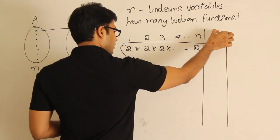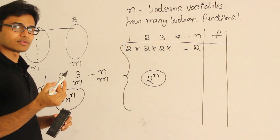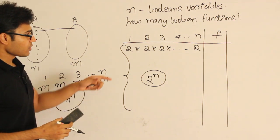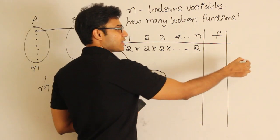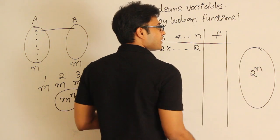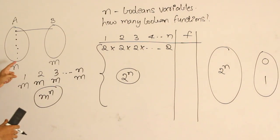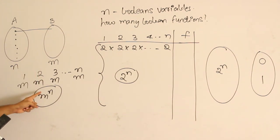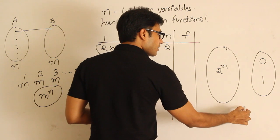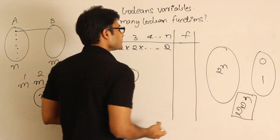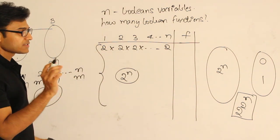Now think about it: this is a function, and every row can take two values. So one set contains 2^n elements (the input combinations) and these must be mapped to another set containing only two values: 0 and 1. Comparing with the general formula — n elements in A, m elements in B gives m^n functions — here we have 2^n elements mapped to 2 values, giving 2^(2^n) boolean functions. So with n boolean variables, the number of boolean functions possible is 2^(2^n).